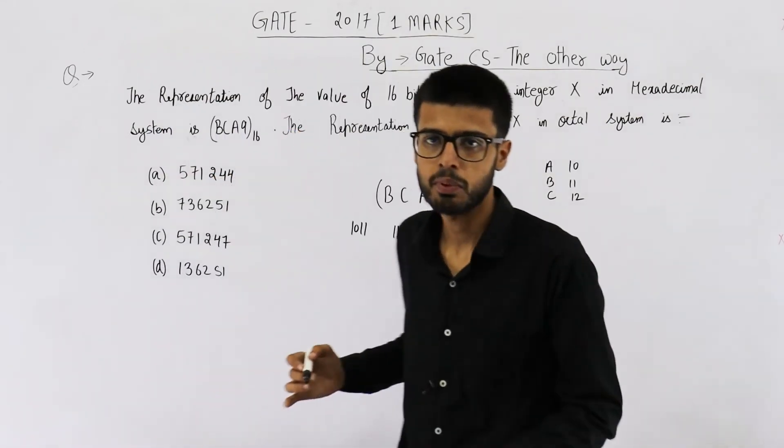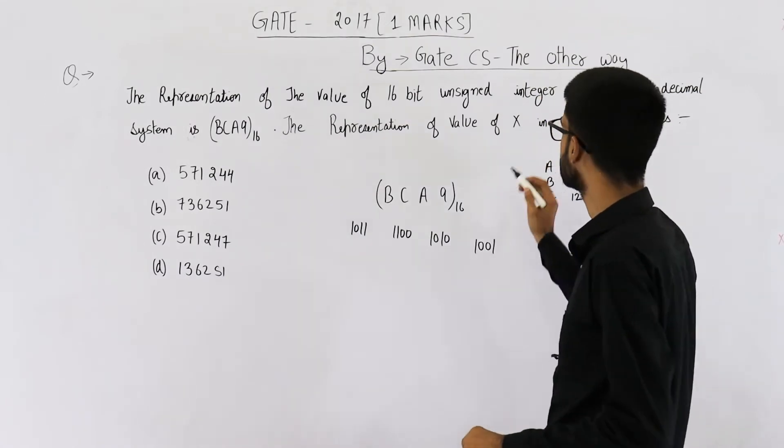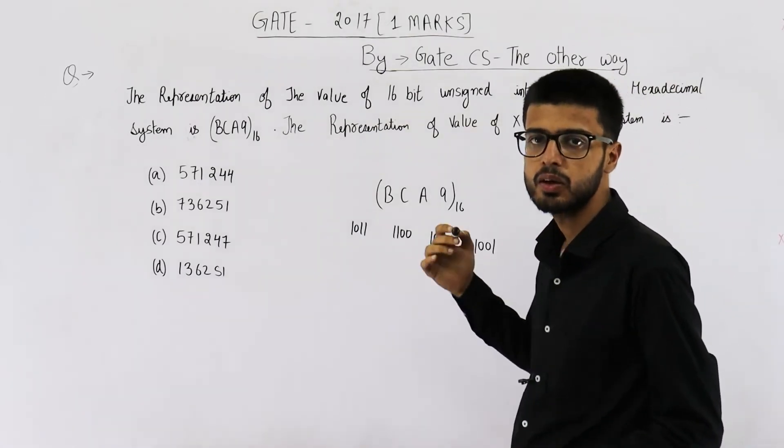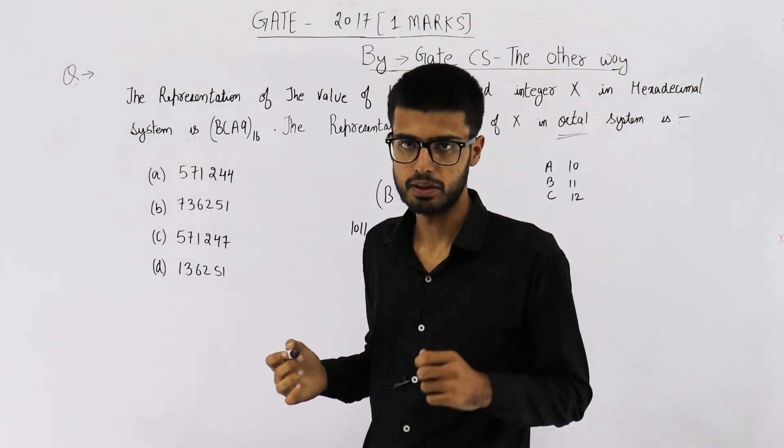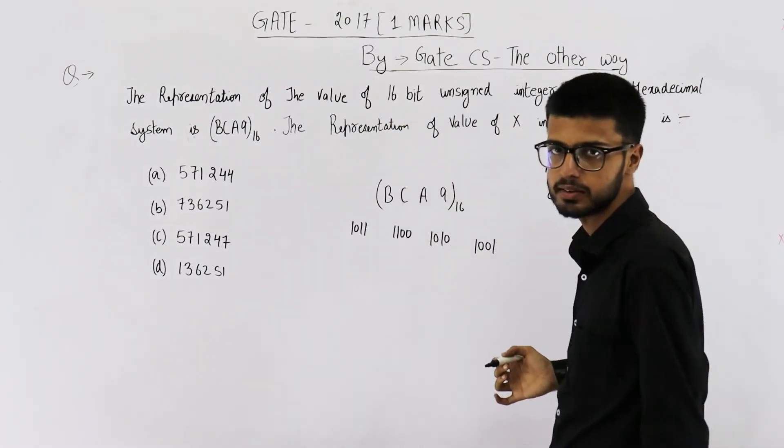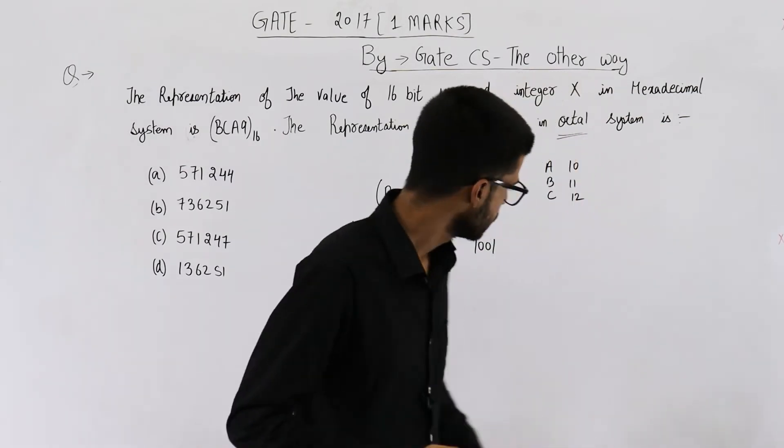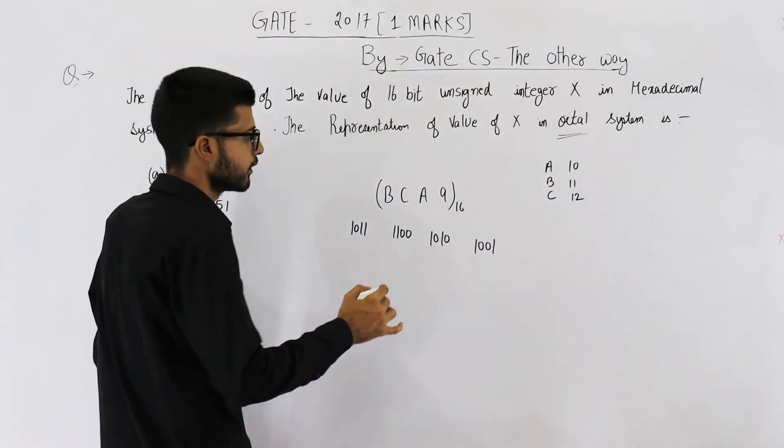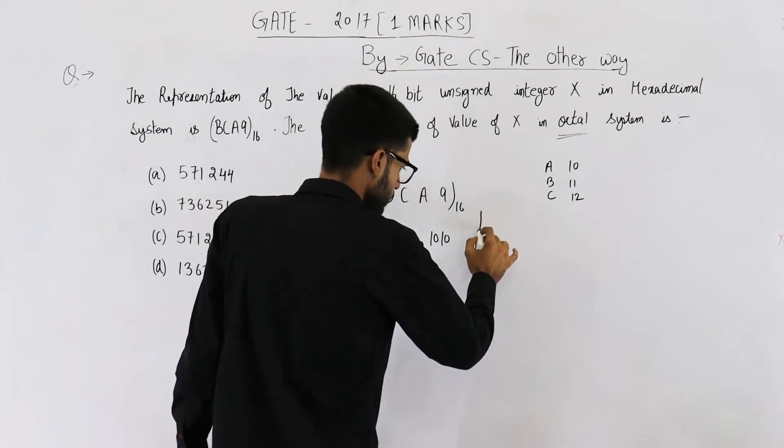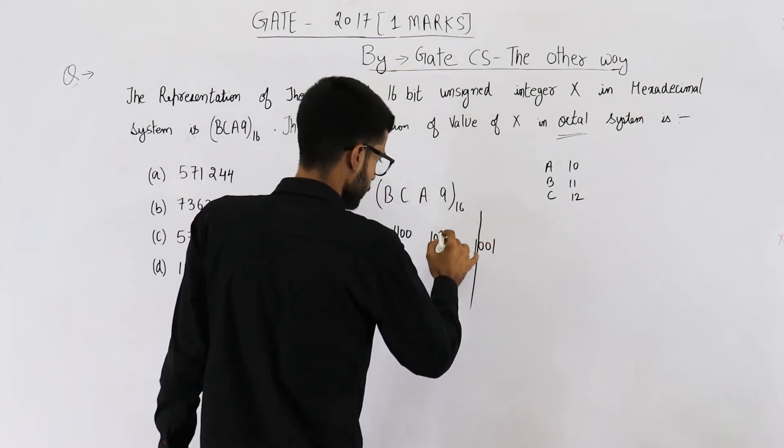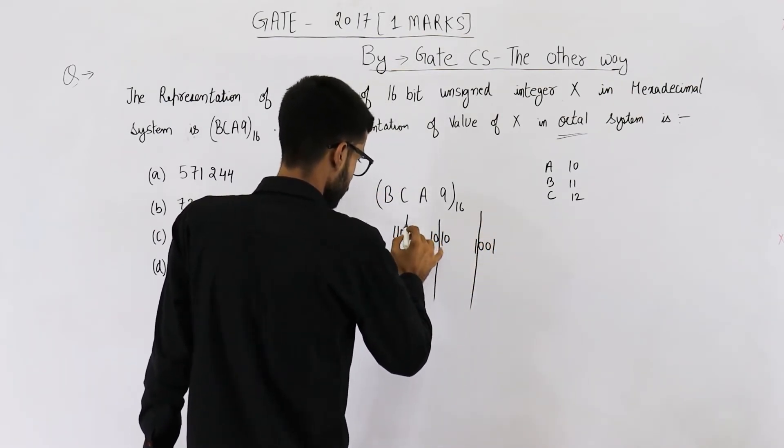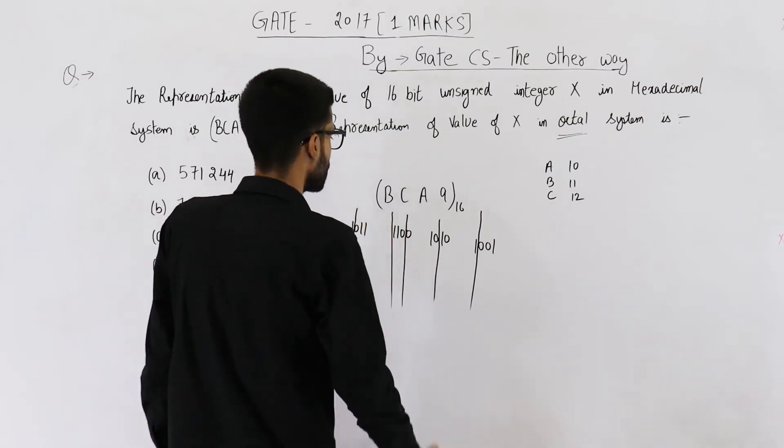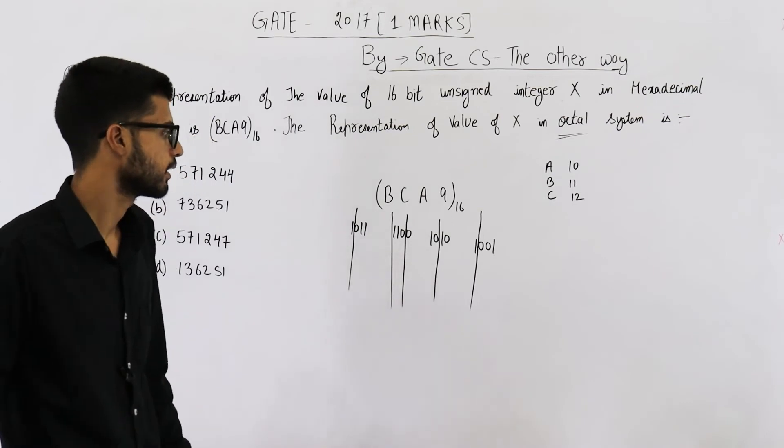Now this binary number needs to be converted to base 8. Base 8 means we need to combine 3 bits starting from the right side, because 8 can be written as 2 raised to the power 3. So let us combine 3 bits. So this is the number that you will get.